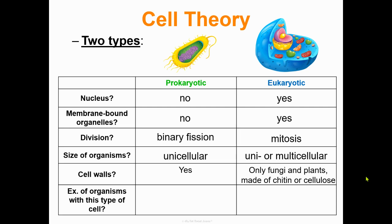What types of organisms make up each type of cell? Bacteria is a great example of a prokaryotic single-celled organism. Eukaryotic cells can be organisms like animals, plants, fungi, or protists.